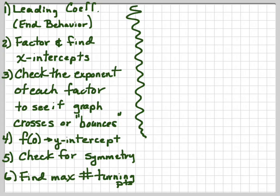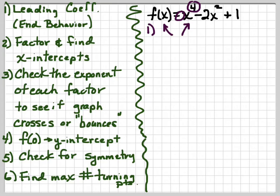All right. Let's go through an example here. We're going to do f of x equals x to the fourth minus 2x squared plus 1. Okay. The first thing, my leading coefficient suggests that it's going to be up and up, both of them, because it's even function with a positive leading coefficient.